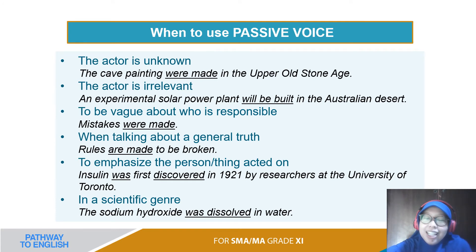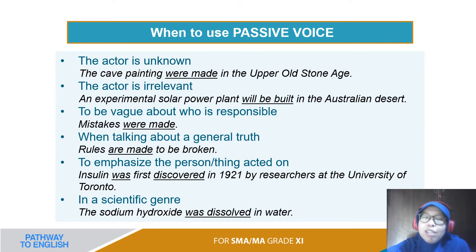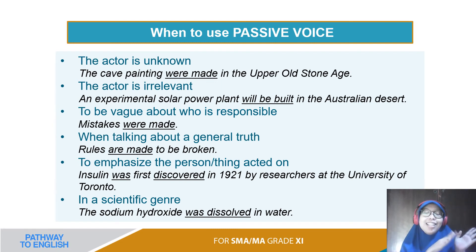Next: the actor is irrelevant. Terkadang aktornya pun tidak relevan. 'An experimental solar power plant will be built in Australian desert.' Ini sebagai subject, 'will be built' adalah verb-nya, 'in Australian desert' adalah adverb of place. Sudah unknown, irrelevant lagi. Tapi tidak semua kalimat pasif tidak ada subjeknya — seperti yang sudah dicontohkan sebelumnya, kita bisa menambahkan 'by siapa'.